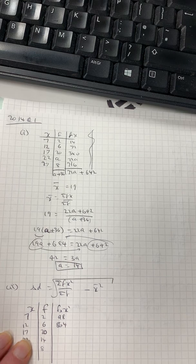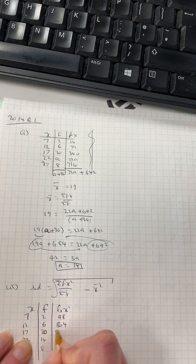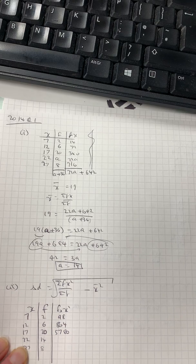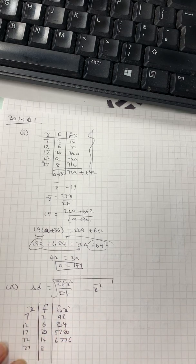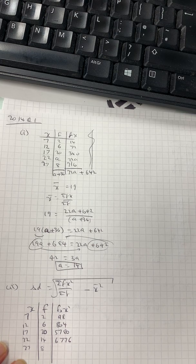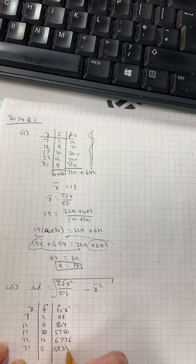17 squared times 20 is 5780. 22 squared times 14 is 6776. And 27 squared times 8 is 5832.